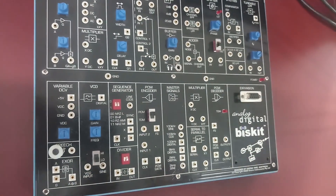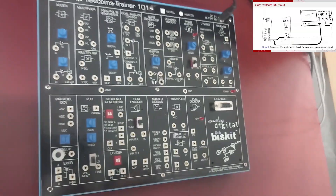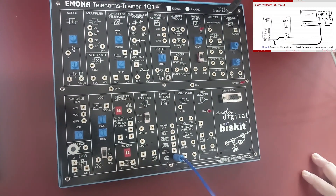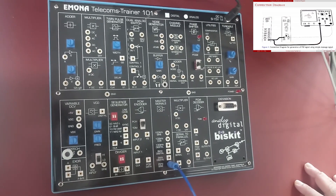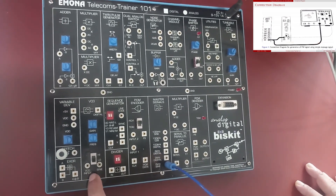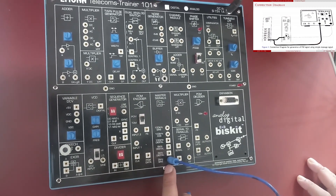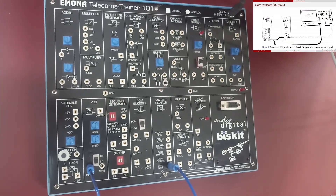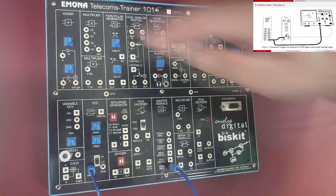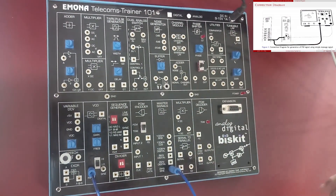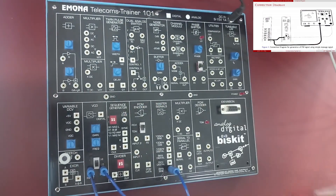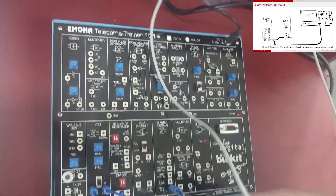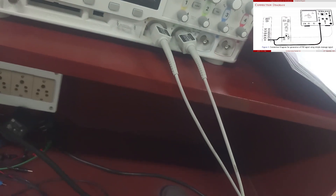Connect accordingly for the first part. We will give a two kilohertz sine wave to the input. As you can see in the connection diagram, we use VCO. You give a two kilohertz sine wave to the input of VCO. VCO is used to generate FM signals. The output of VCO we will observe through channel 2 of the DSO.